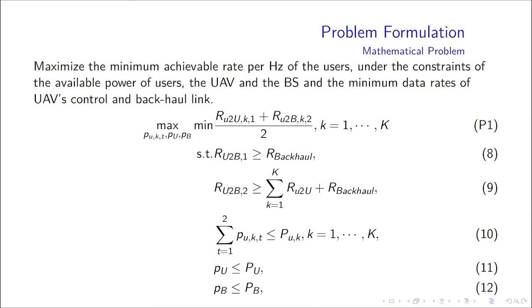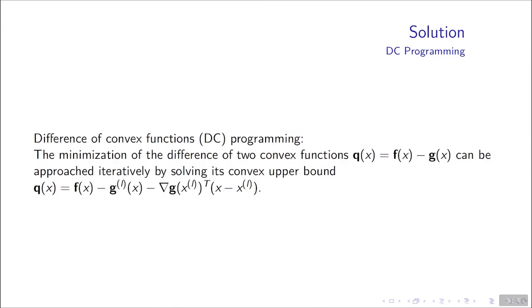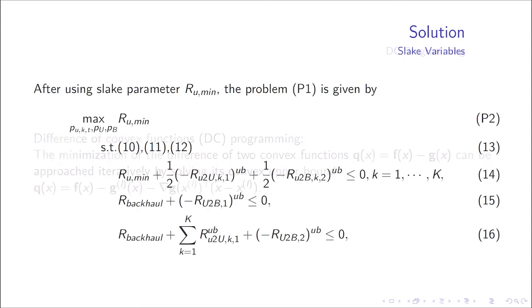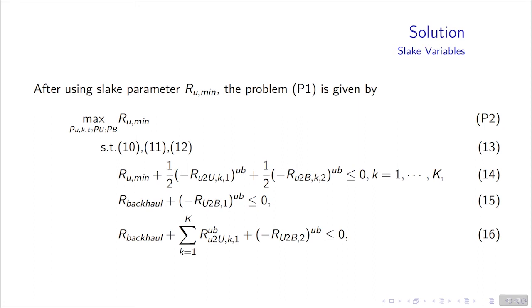To solve the problem, we use DC programming. This is a method to solve the difference of two convex functions. The second convex function is approximated by its first-order Taylor expansion at the position of xL. By updating xL in each iteration L, the solution can be approached. We use RU minimum as a slack parameter to transfer the objective function of P1 to a convex function.